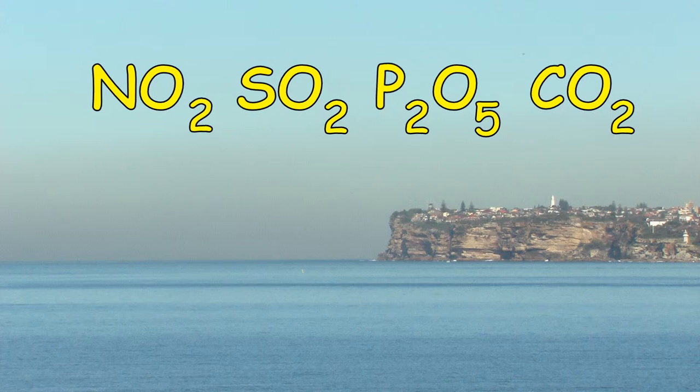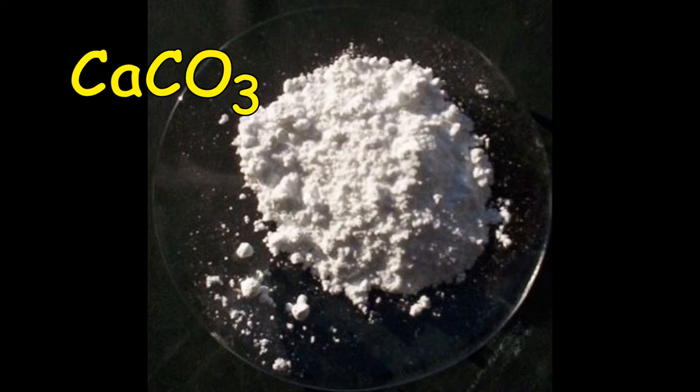Oxides of nitrogen, sulfur, phosphorus and carbon cause acid rain to fall on the world's cities and forests. Farmers are very wary of soils becoming too acidic for healthy crops. They speak of the soil becoming too sour.